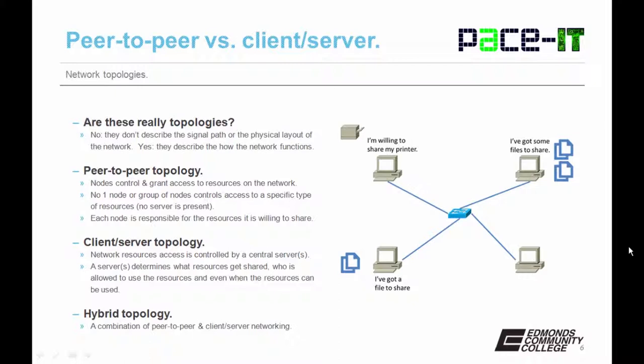In a peer-to-peer topology, the nodes control and grant access to resources on the network. No one node or group of nodes controls access to a single specific type of resource. There's no real server present — each node is responsible for the resources it's willing to share.